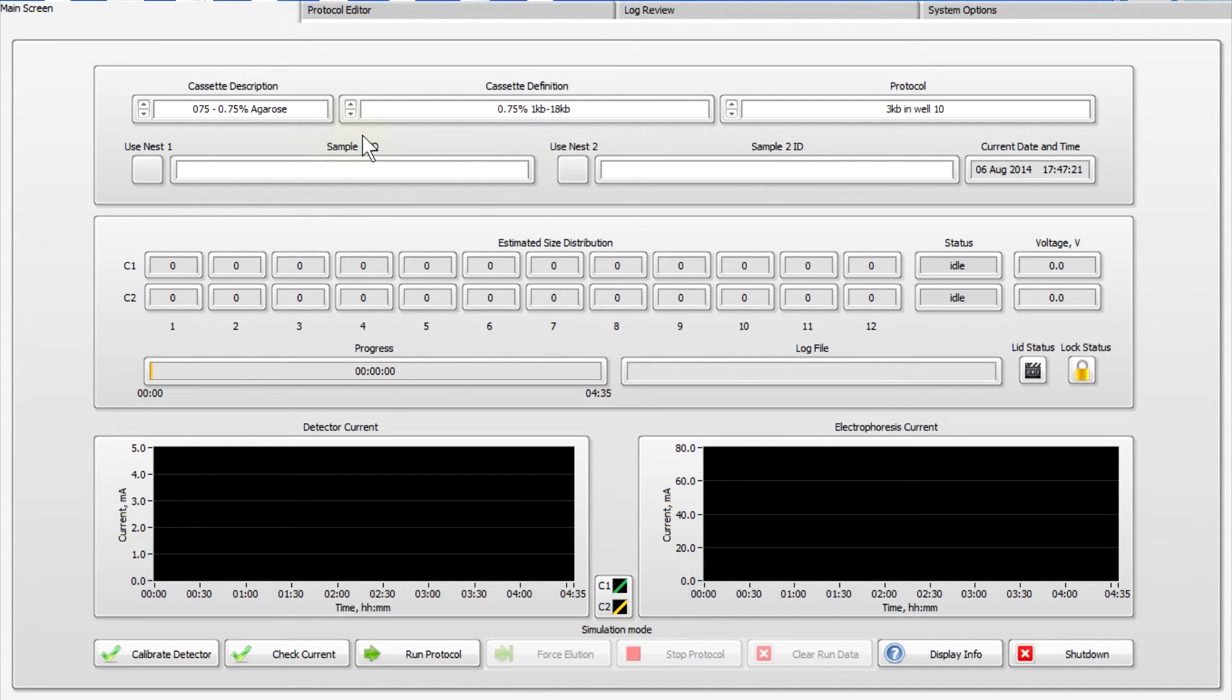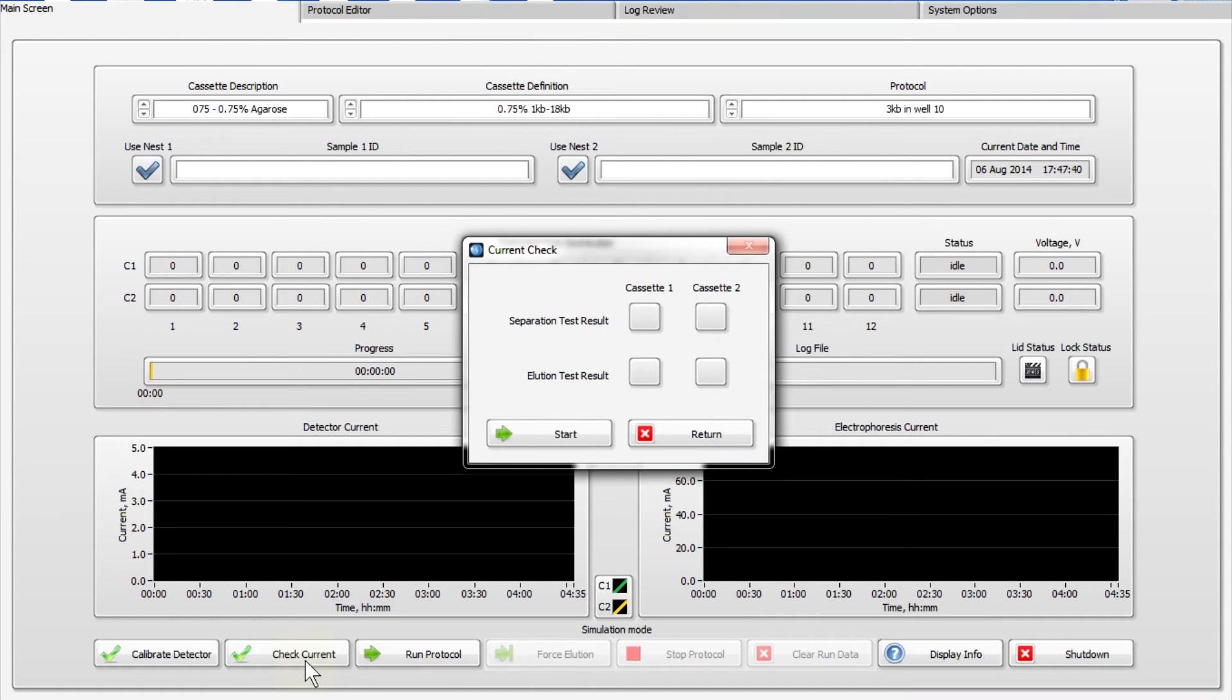Select the nest or nests onto which the cassette or cassettes have been placed. Press the check current button. You will hear the lid mechanism engage and the test will automatically proceed.